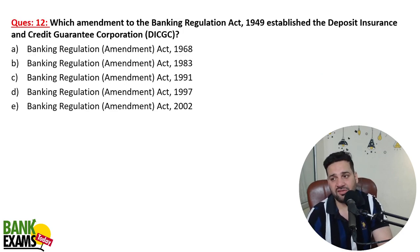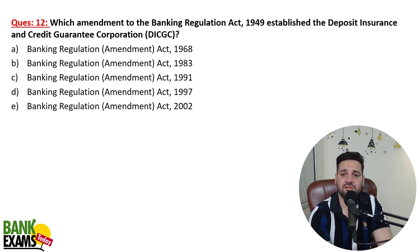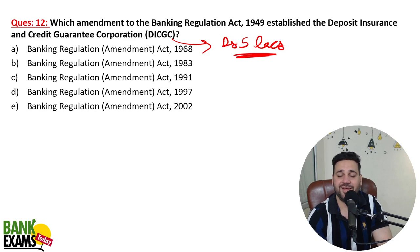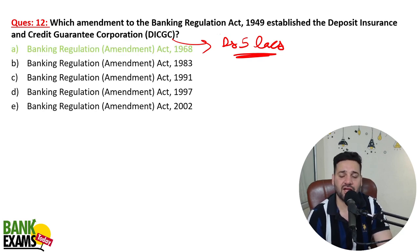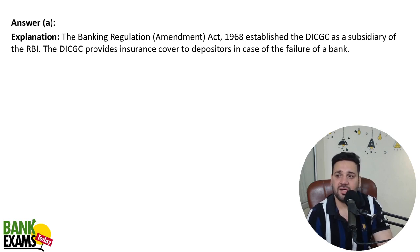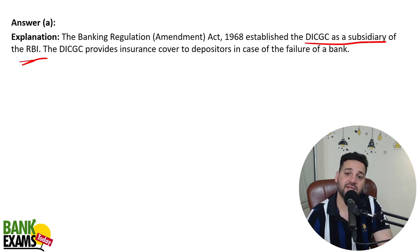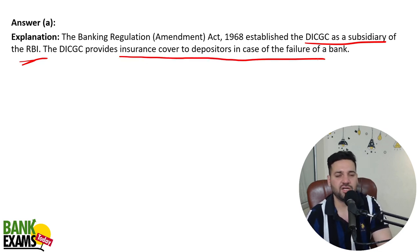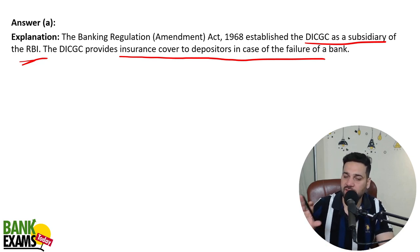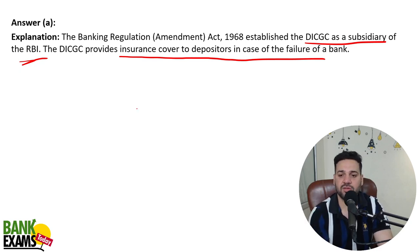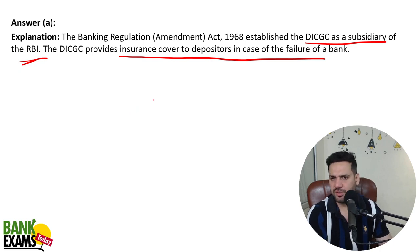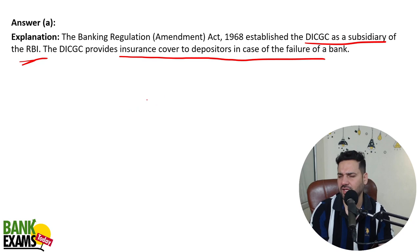Which amendment to the BR Act established the Deposit Insurance Credit Guarantee Corporation (DICGC)? DICGC insures deposits up to 5 lakh rupees in your savings bank account. It was established via the Banking Regulation Act 1968 and is a subsidiary of the Reserve Bank of India. DICGC provides insurance cover to depositors in case a bank fails — if you have multiple accounts, each account gets up to 5 lakh rupees of coverage. This limit was recently increased from 1 lakh to 5 lakh.